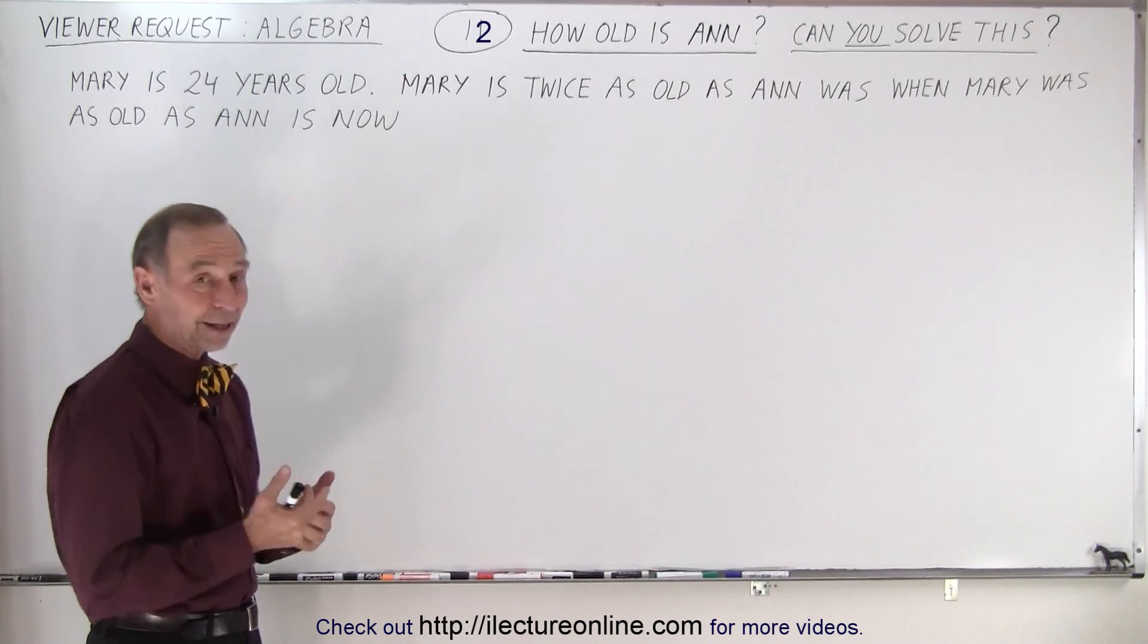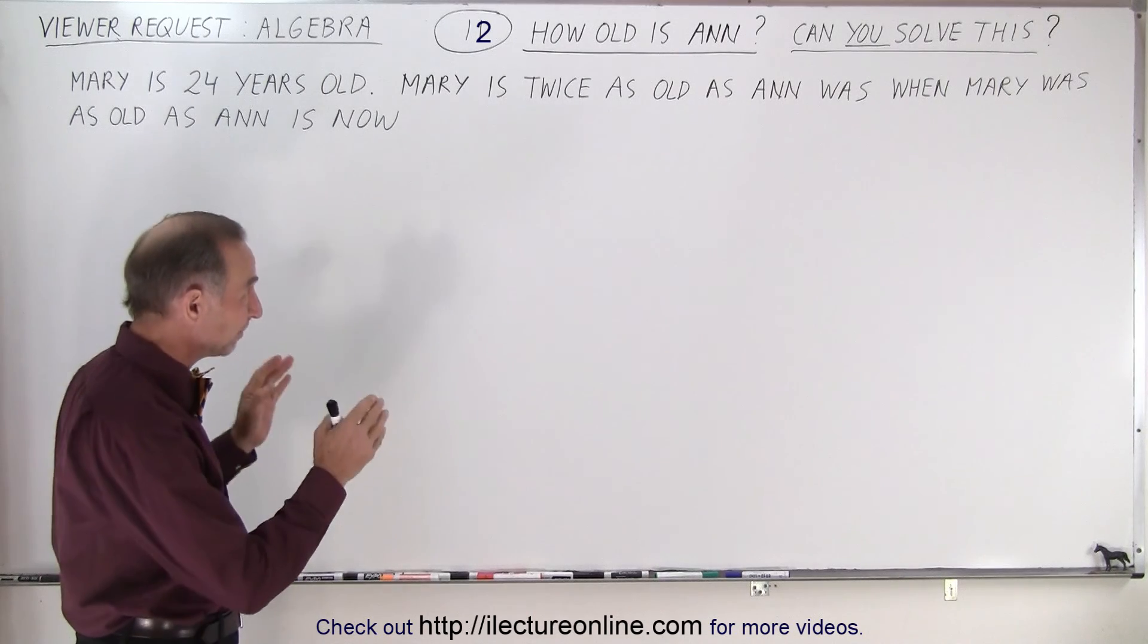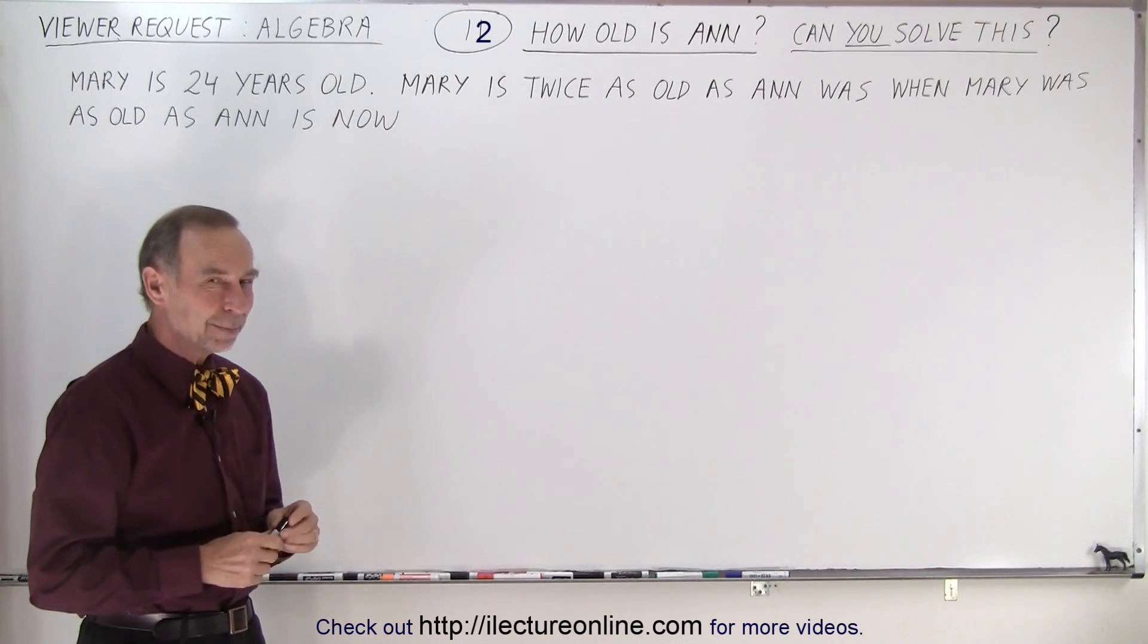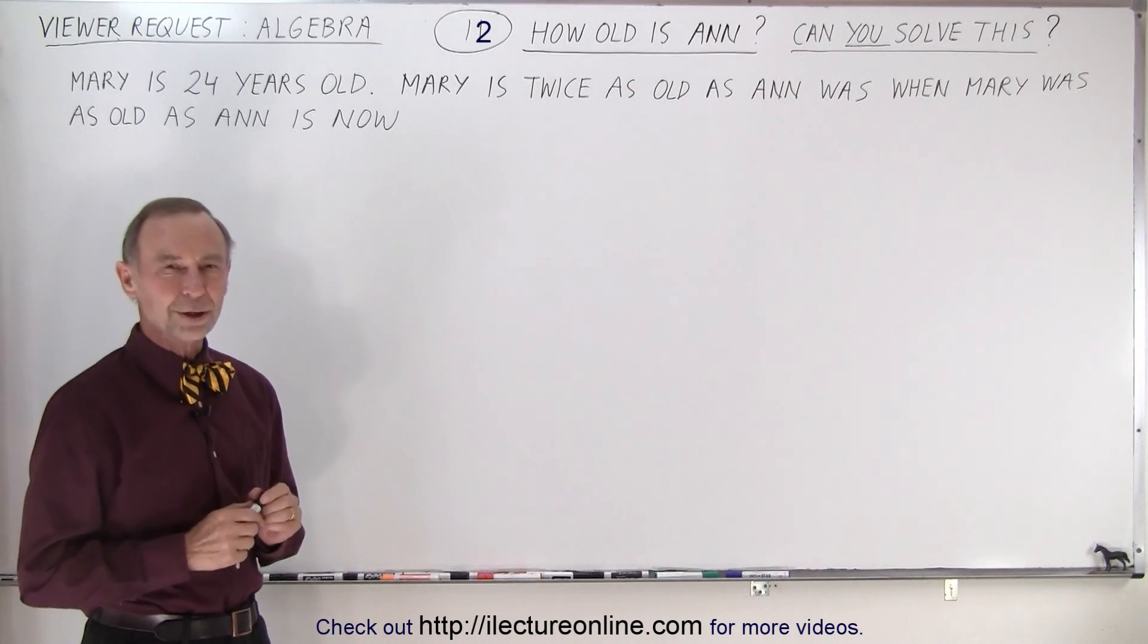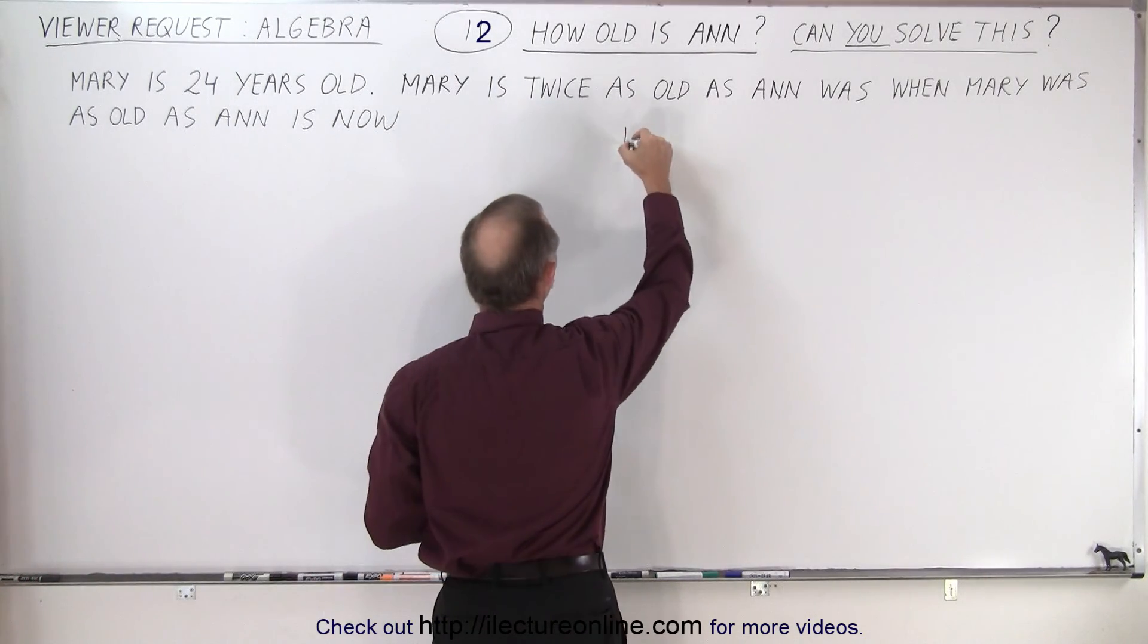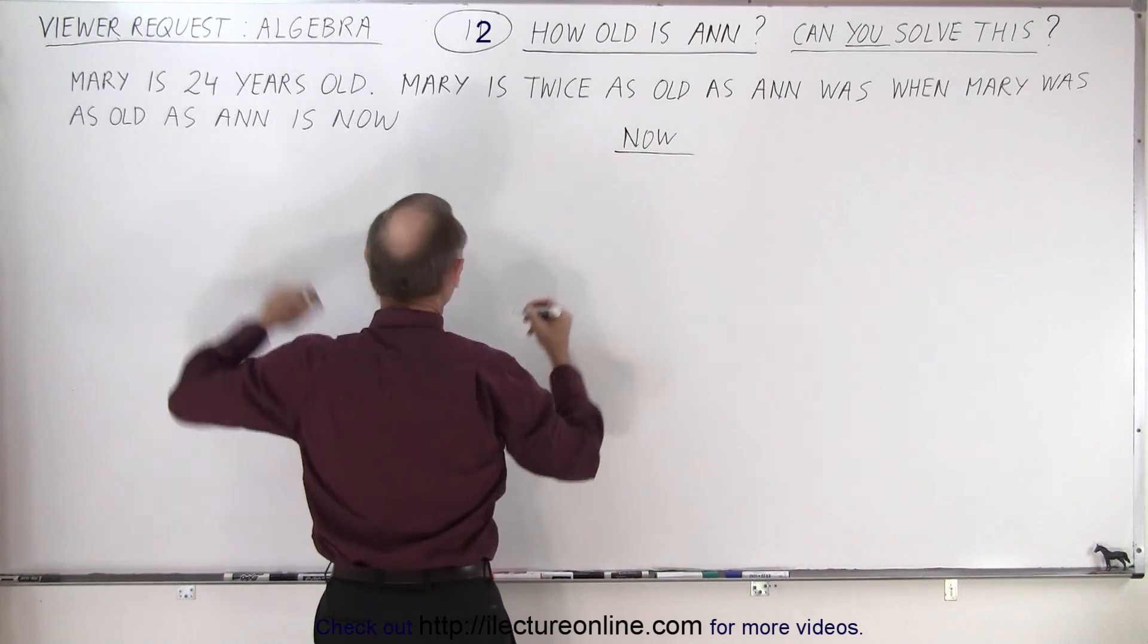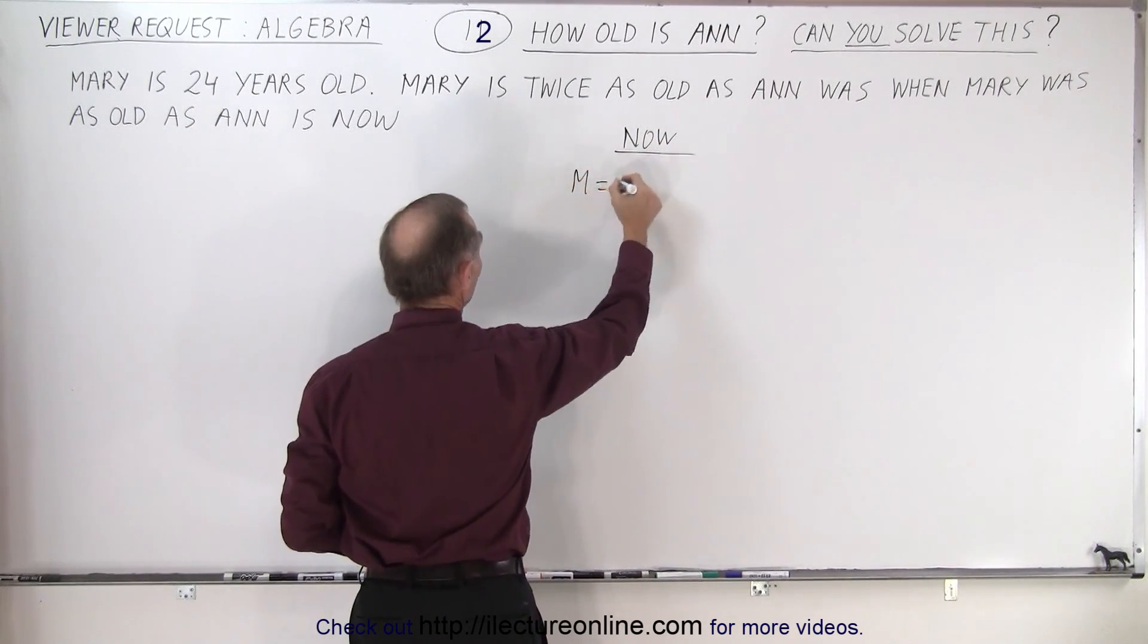So I went back to my old bag of tricks because we've solved a lot of problems with ages before and none quite like this one. But the bag of tricks always seems to work. And so what we do is we say well what are the ages now? So now we're told that Mary is 24 years old, so M equals 24.